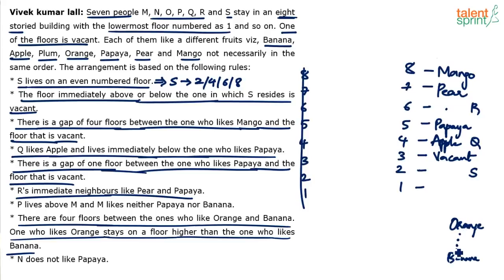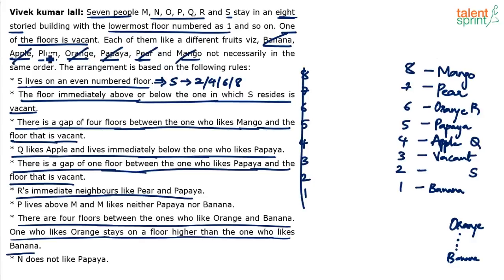Now placing orange and banana: there are four floors between them and orange is above banana. The only possibility is orange on floor 6, and counting 1, 2, 3, 4 floors down, banana on floor 1. The six assigned fruits are banana, apple, papaya, orange, pear, and mango. Plum is the remaining fruit, which goes to S on floor 2.